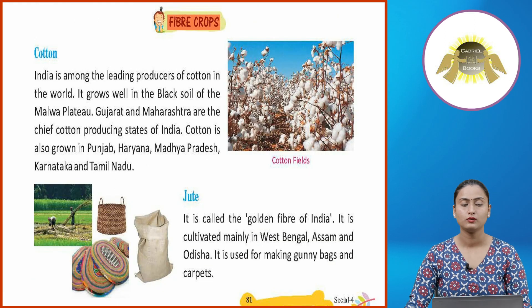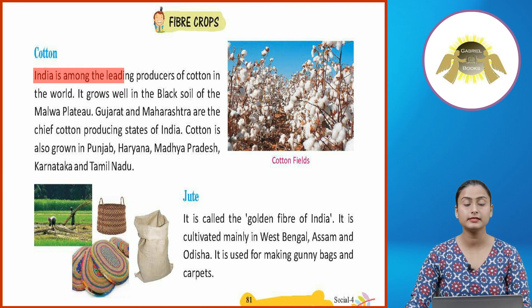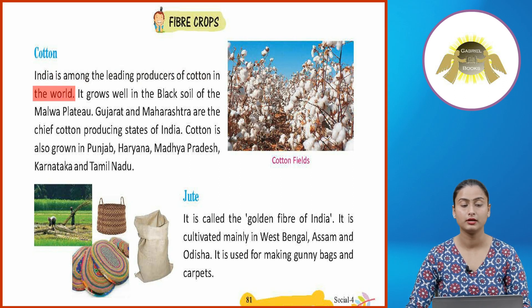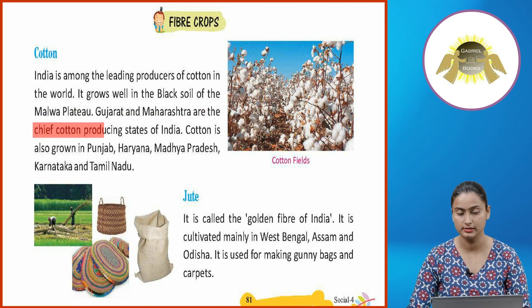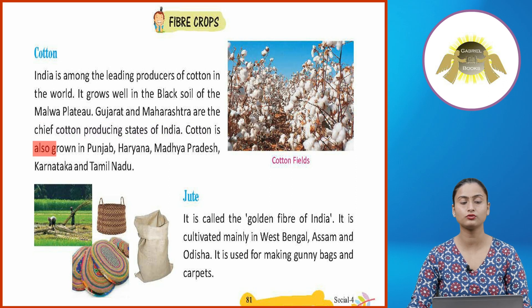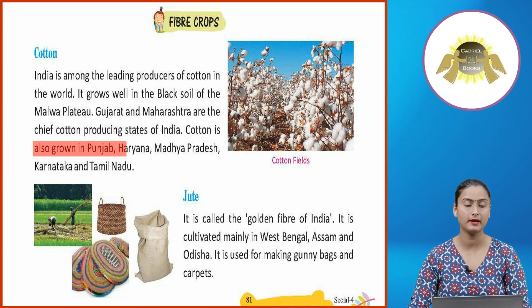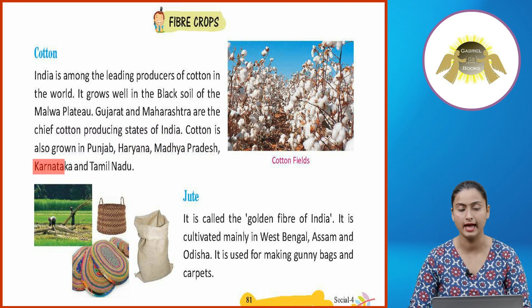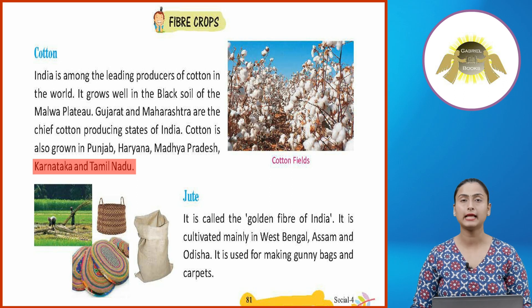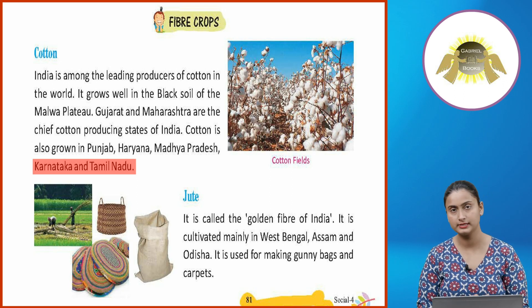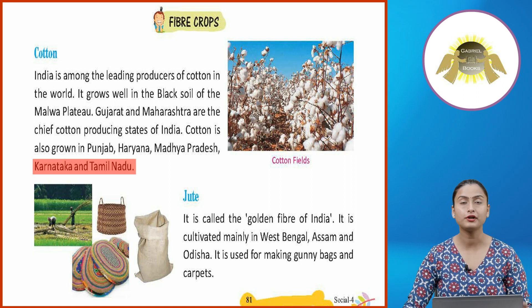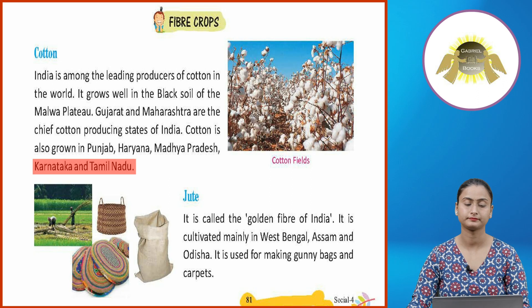Fiber Crops — Cotton. India is among the leading producers of cotton in the world. It grows well in the black soil of the Malwa Plateau. Gujarat and Maharashtra are the chief cotton-producing states. Cotton is also grown in Punjab, Haryana, Madhya Pradesh, Karnataka and Tamil Nadu.